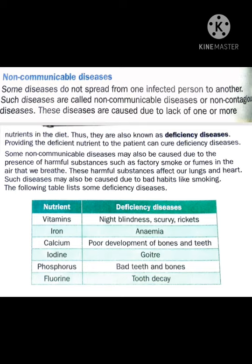Scurvy is caused by the deficiency of vitamin C, and rickets is caused due to the deficiency of vitamin D. Iron is a mineral and its deficiency causes anemia. Calcium is also a mineral and its deficiency causes poor development of bones and teeth.